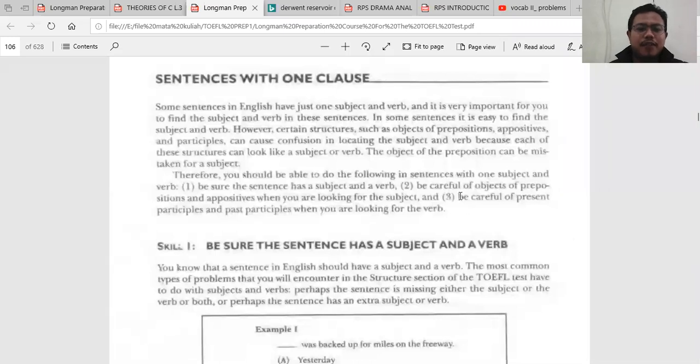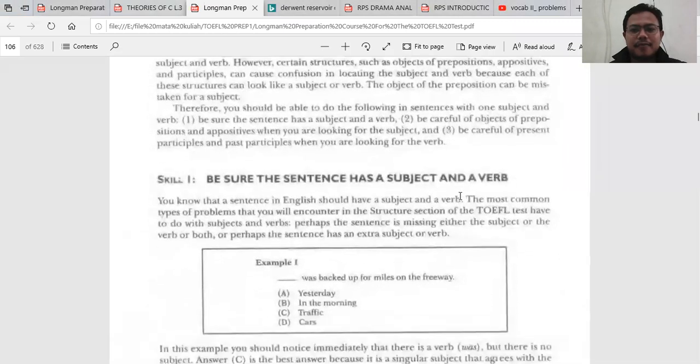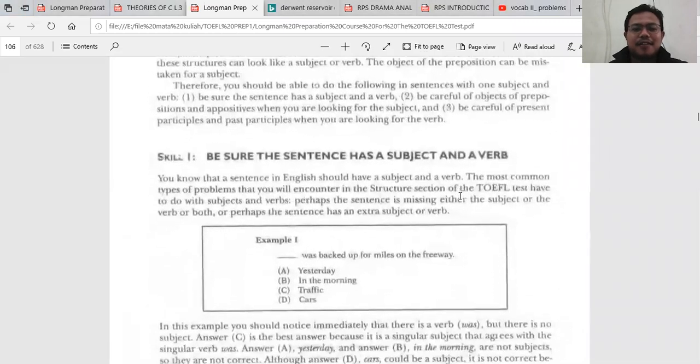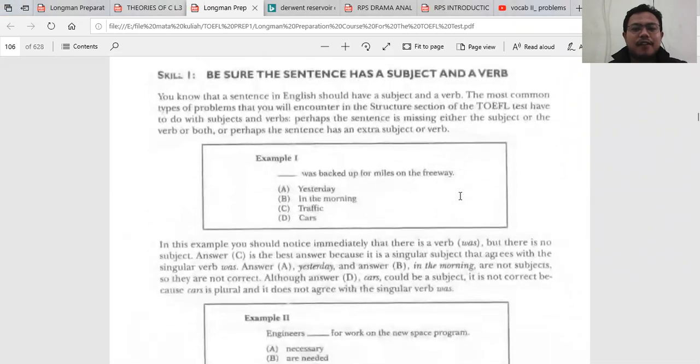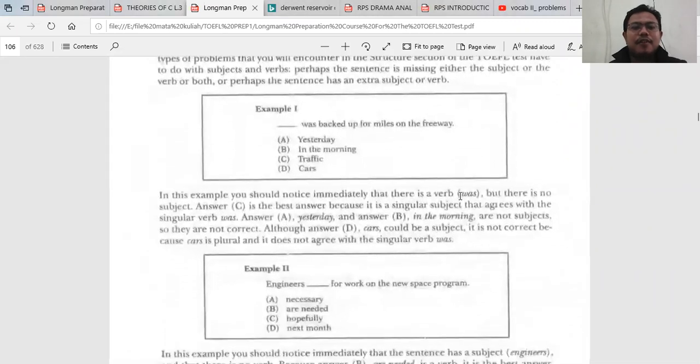Sentences with one clause - be sure that the sentence has a subject and a verb, because if a sentence doesn't contain a subject or miss a verb, it is wrong. In the TOEFL test you will find such kind of questions. Look at example one: 'The [blank] was backed up for miles on the freeway.'